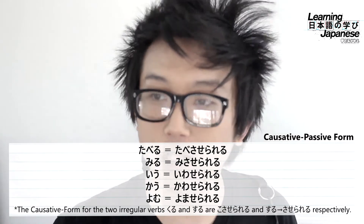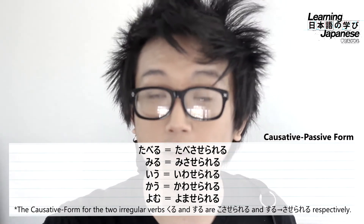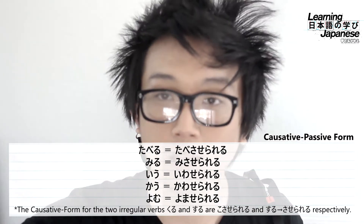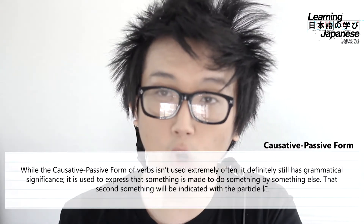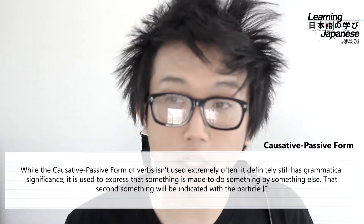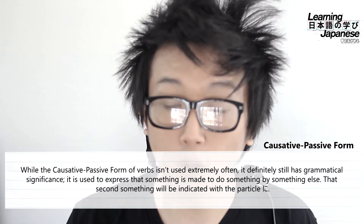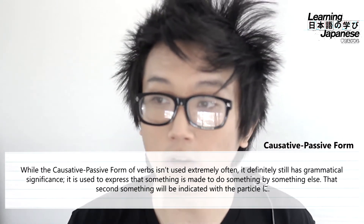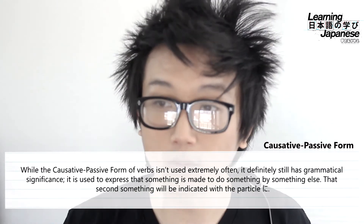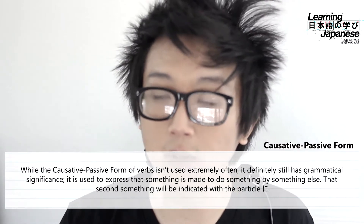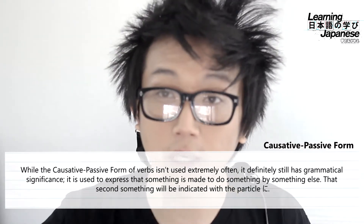Lastly we have the two irregular verbs. The verb kuru, 'to come,' and the verb suru, 'to do,' change into kosaserareru and saserareru respectively. One last thing before jumping into the example sentences: this grammar pattern is usually used when you have a subject and another entity that is making the subject do something. That entity doing the forcing is indicated by the particle ni — it won't always appear explicitly since it might be implied, but when it does it will be marked by ni.